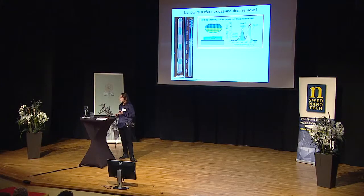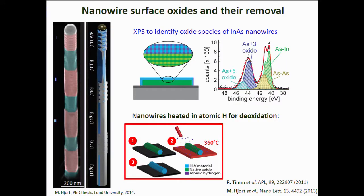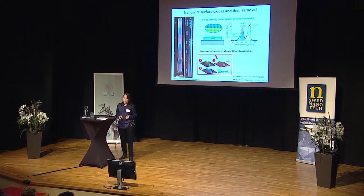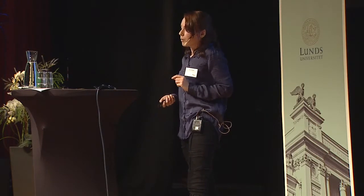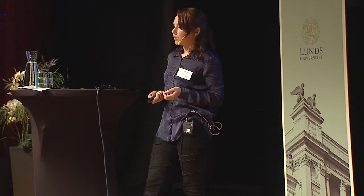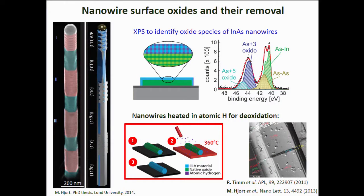Furthermore, we can continue these oxide studies and look at different processes with the synchrotron. We can take the nanowires in the chamber where we're performing the synchrotron experiments, heat them up to elevated temperatures, and expose them to hydrogen gas. What this does is remove oxide from the surface of the nanowires. When we perform our XPS measurement again, we can watch as those oxide peaks completely disappear. We can also use STM studies performed at the university to build up an atomic-scale picture of the nanowires after the oxides are removed. In this way, we can get a lot of chemical and structural information on the nanowires.